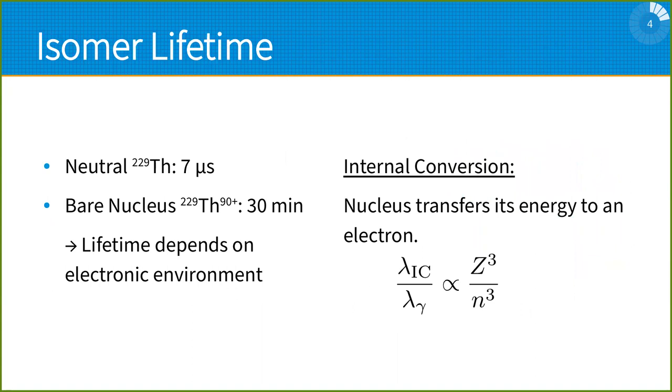This leads to some very interesting properties, one of which is the lifetime of the nuclear excited state. In neutral thorium-229, it is 7 microseconds. For the bare nucleus — a totally ionized atom — it is 30 minutes. So the lifetime of this nucleus depends on the electronic environment.